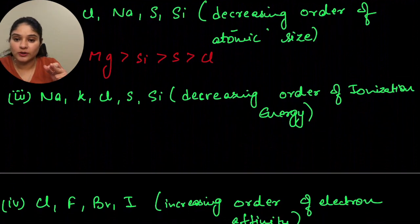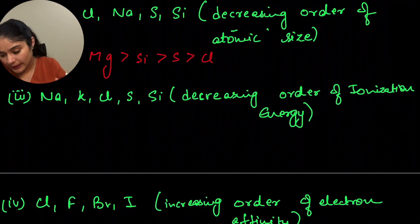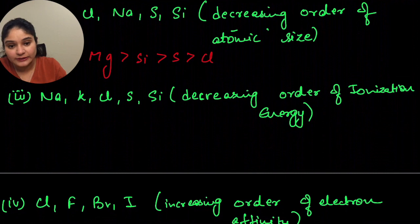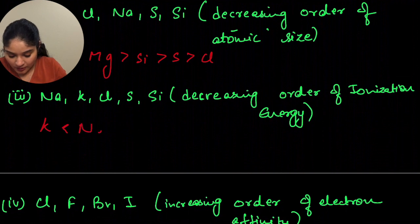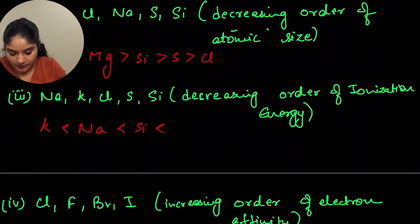Next: sodium, potassium, chlorine, sulfur, and silicon — arrange in decreasing order of ionization energy. Decreasing order of ionization energy would be: potassium, sodium, silicon, sulfur, and chlorine.